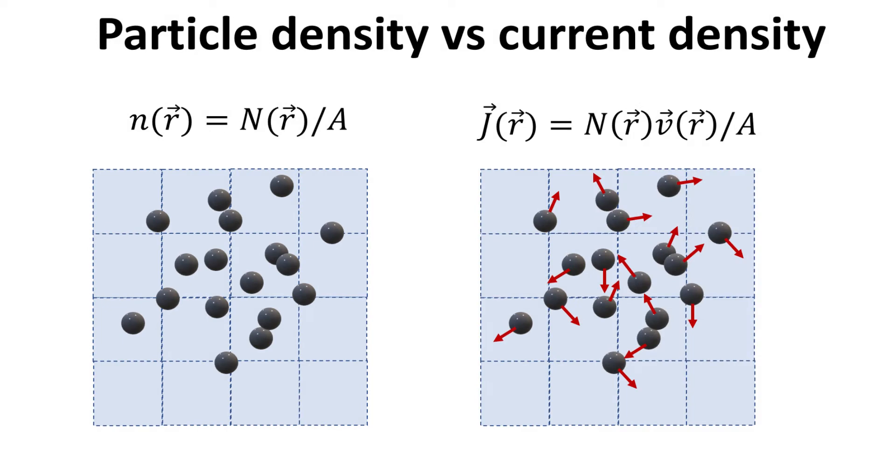In general, the particles at a given snapshot in time are also moving at some velocity. The current density, J, at R, is the average velocity of the particles in that unit area multiplied by the number of particles.